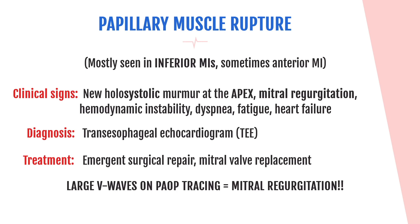Papillary muscle rupture is diagnosed with an echocardiogram — as are almost all valvular dysfunctions, including aortic stenosis and aortic insufficiency. Treatment is emergent surgical repair of the affected valve to prevent further cardiac damage and death. One extra tidbit: if you have a PA catheter with the balloon inflated, in the setting of mitral regurgitation you will see large V-waves on the PAOP tracing due to backflow of blood into the left atrium. Large V-waves on PAOP tracing equals mitral regurgitation.